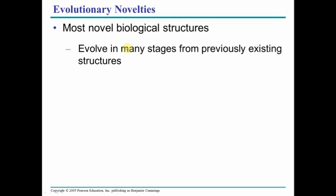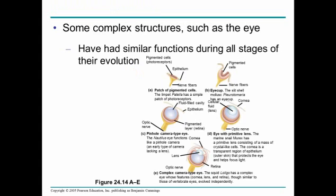Most of the complex biological structures that we know of are believed to have come from previously existing structures. Complexity is built off of things that are previously slightly less complex, such as in the eye. We can look at the eye structure of different organisms and see how each is a step up from the next, until you get the complex human eye.